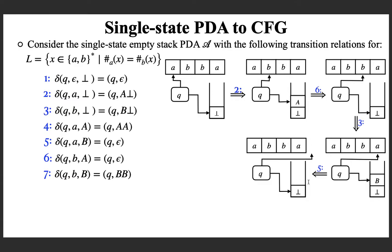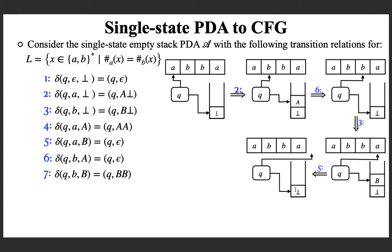Note that this is an empty-stack machine — to accept, you want to empty the stack. The stack still contains the bottom-of-stack symbol. Without consuming any symbol, you need to take out bot. Transition number 1 handles this: if you are in state Q and the top of stack is bot, you can pop bot without consuming input. Applying transition number 1 gives the final configuration where the input is fully read and the stack is empty. By the empty-stack acceptance criterion, the string is accepted. This is a 5-step computation for accepting ABBA.